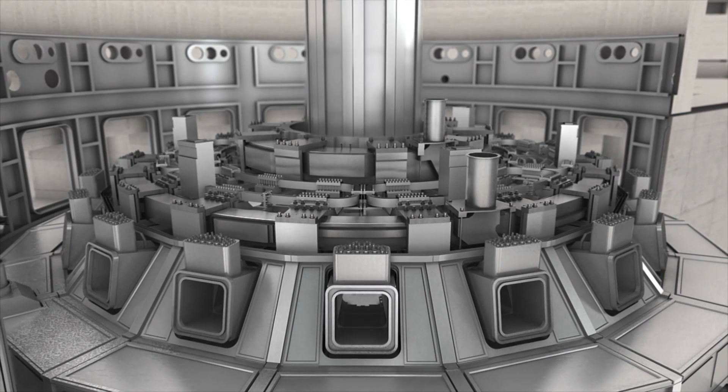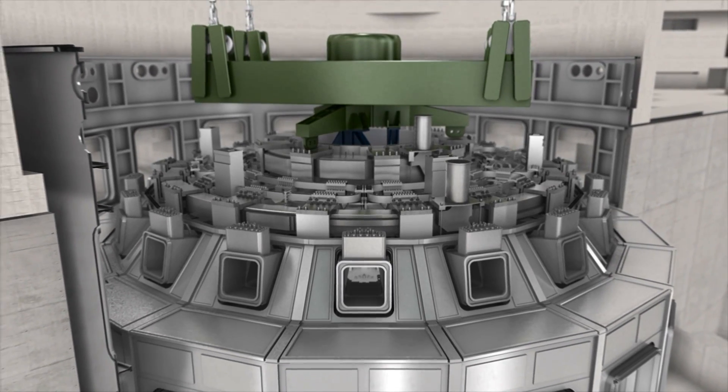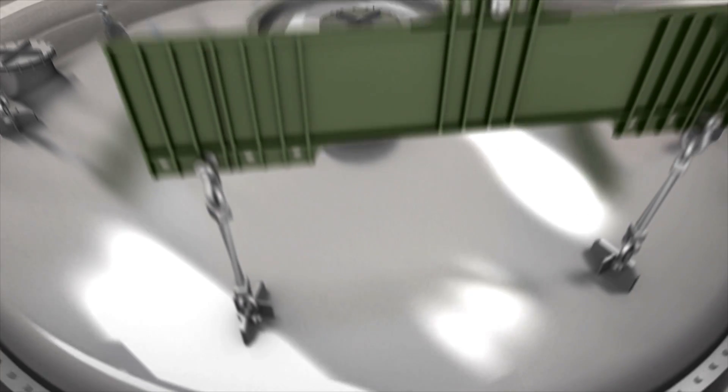Last in line is the 18-metre-tall central solenoid. The powerful electromagnet will be the last major component to be installed in the machine pit before the cryostat is closed up.